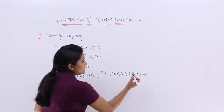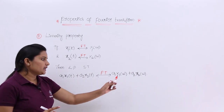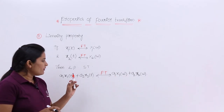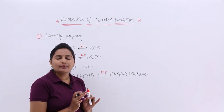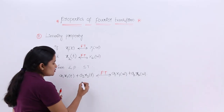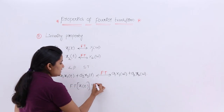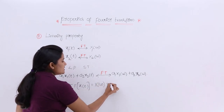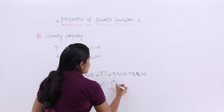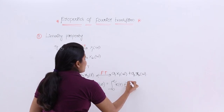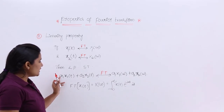For better understanding, I want to consider the proof. Whenever you are writing transforms, please keep in mind you need to write in terms of capital letters; when writing signals, indicate them in small letters. The Fourier transform equation: the Fourier transform of x(t), denoted X(ω), equals the integral from minus infinity to infinity of x(t) times e^(−jωt) dt.